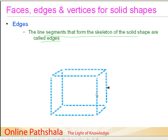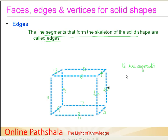There are different line segments which you can find here. For example, this is one line segment, this is another one. We can count the number of segments: one, two, three, four, five, six, seven, eight, nine, ten, eleven and twelve. So this skeleton structure for this cuboid is made out of twelve line segments, or we can also call them twelve edges.